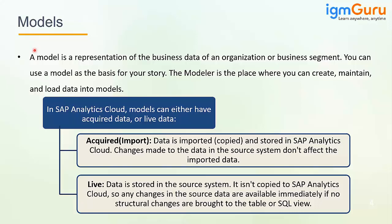In an import model, data is copied and stored within SAC. Whatever changes are made to the data in the source system don't affect the imported data until you copy again, modify again, or rerun the schedule. Whereas in a live model, data is stored only in the source system — any changes in the source data are immediately reflected within the SAC model itself.